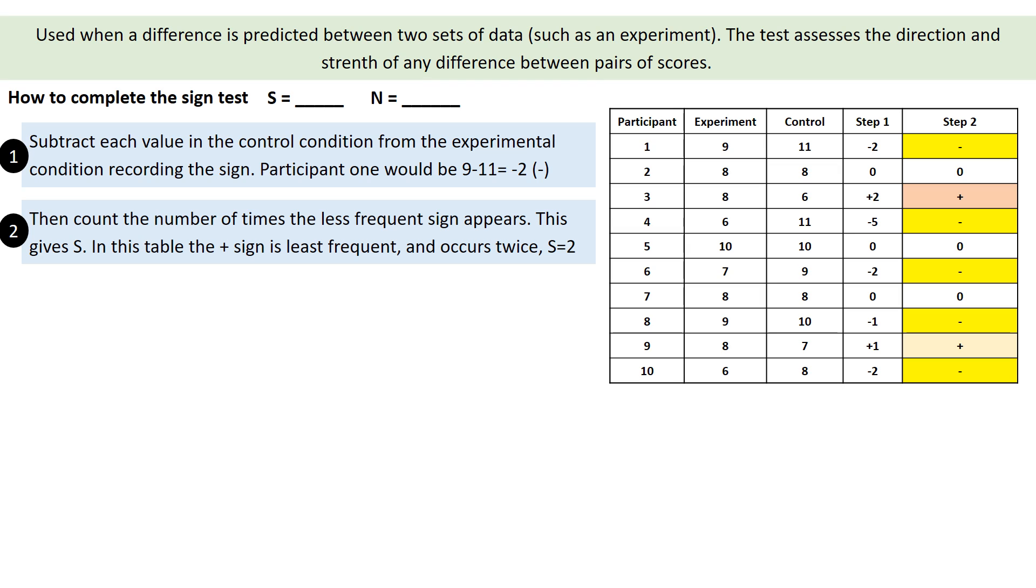What our least frequent sign is, is it is all the people in our experiment who didn't do what we expected them to do. So think about it for a moment. We've done our experiment. Some people have gone one way, some people have gone the other. We're trying to suggest that our experimental condition has an effect. So the people who went against what we expected them to do makes our experimental data weaker.